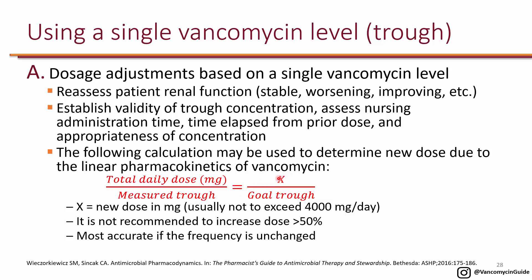Whatever total daily dose you get, convert it to the same frequency. For example, if somebody was receiving 1g Q8h and you solved for a new total daily dose, convert that result back to Q8h. You have to maintain the same frequency — if you try a different frequency, it won't be as accurate. That's how this proportion equation works.